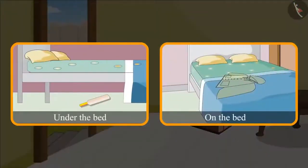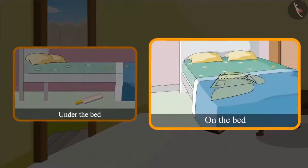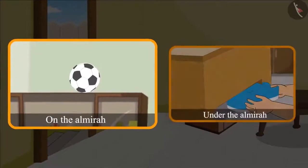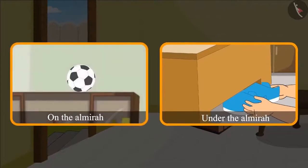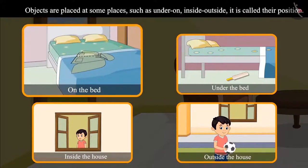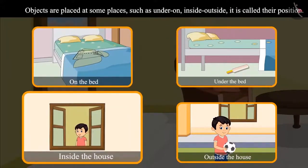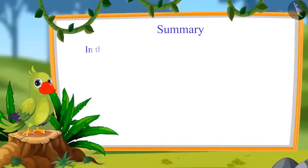Children, did you see where Chotu's bag was kept? His bag was under the bed and his raincoat was on the bed. His mother took the ball from the top of the almira, and Chotu's shoes were under the almira. So children, we have seen that objects are usually kept at certain places, and words such as under, on, inside, and outside are used to exactly tell us their position.